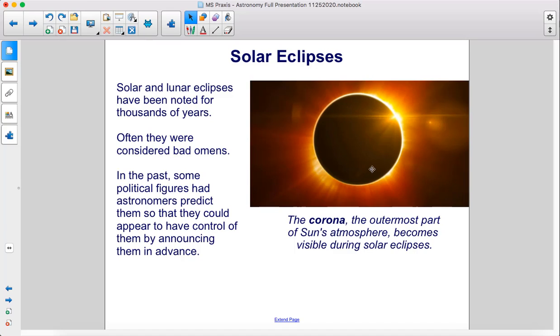The corona is the outermost part of the sun's atmosphere, and it becomes visible during solar eclipses.